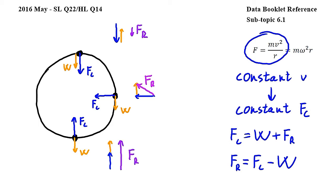Finally, we can conclude that the force exerted by the rod on the mass is minimum at the top of the circle, therefore the answer to this question is D.